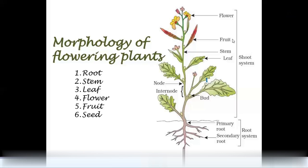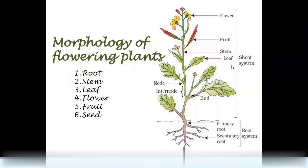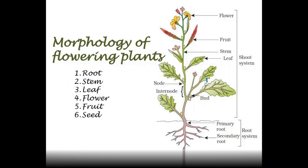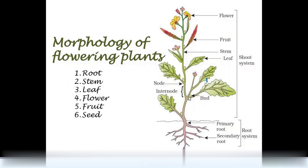This is the entire shoot system: flower, fruit, stem, and leaf. This is the node. The node is the distance point, and we have the internode. The node also has a bud — we have the axillary bud.